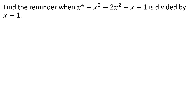Find the remainder when x raised to 4 plus x cubed minus 2x squared plus x plus 1 is divided by x minus 1. In the polynomial, x minus 1 is the divisor. Let's look at the remainder of this.